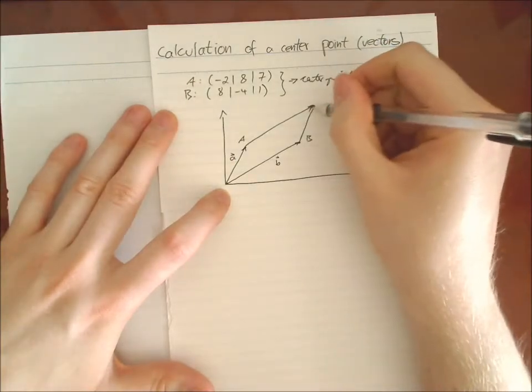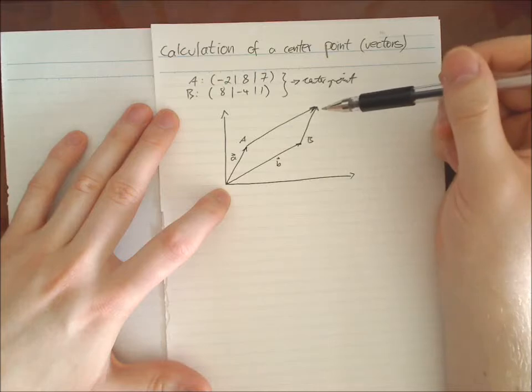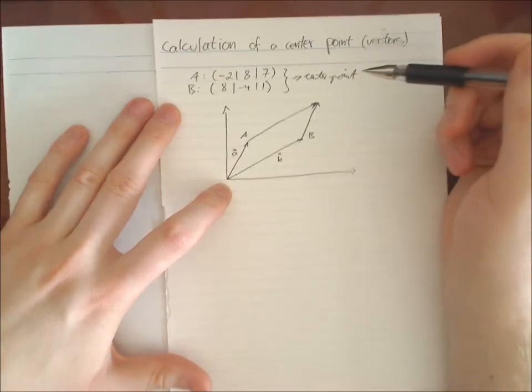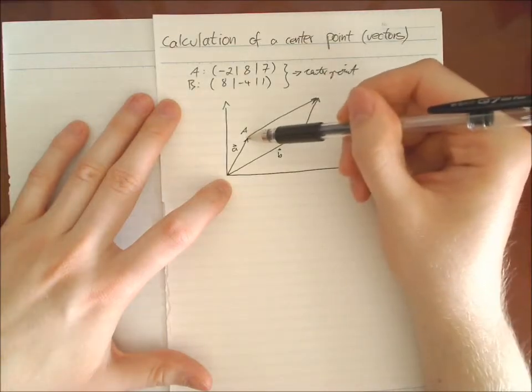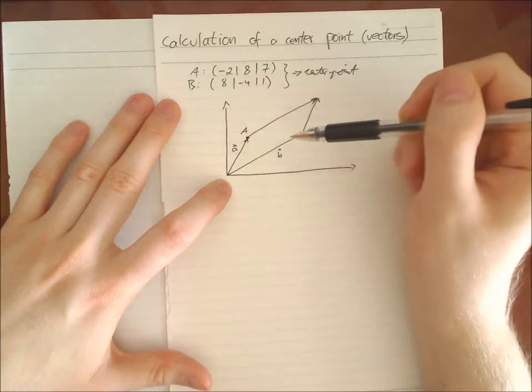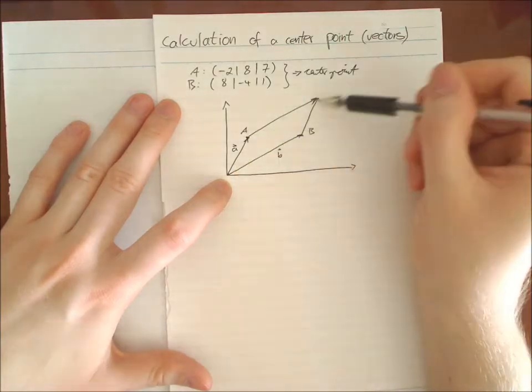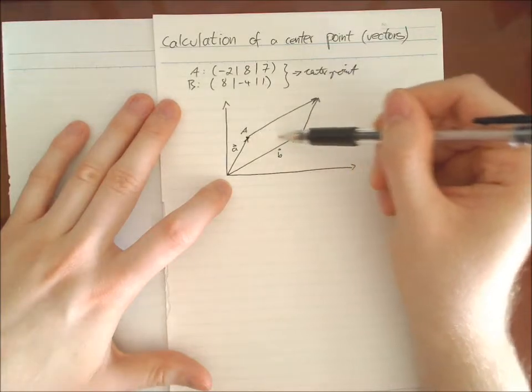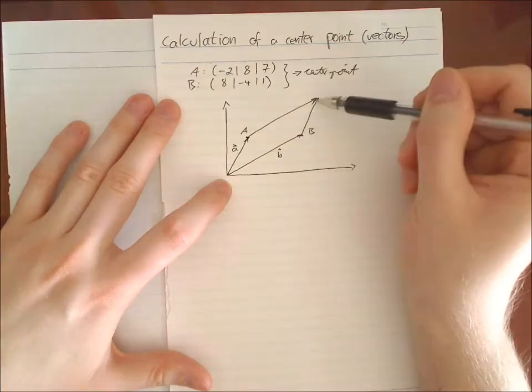And this construction is called a rhombus. And the thing about this rhombus is that the middle point between those two points is one half on, also on this distance. So the middle point of this line is also the middle point of this line.